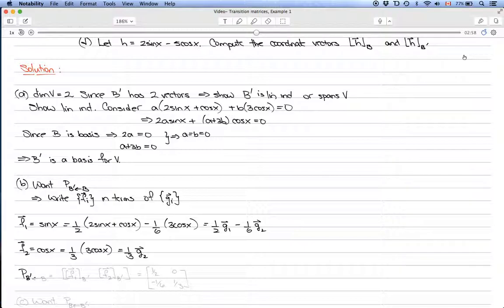The transition matrix, then, is just the columns with the coordinate vectors. So f_1 in terms of B prime and f_2 in terms of B prime, which equals [1/2, -1/6; 0, 1/3].